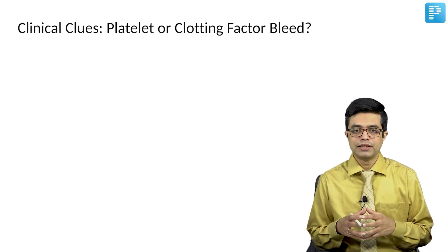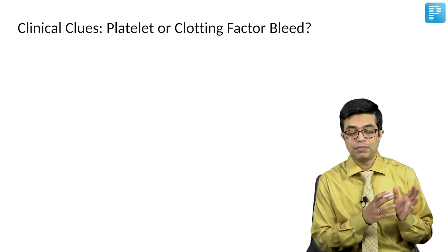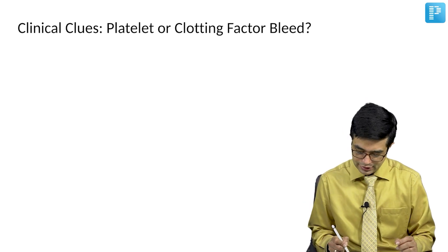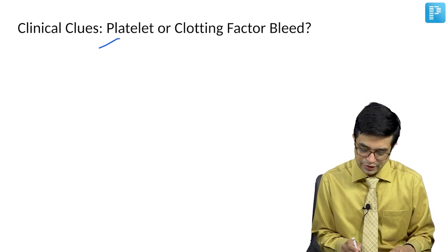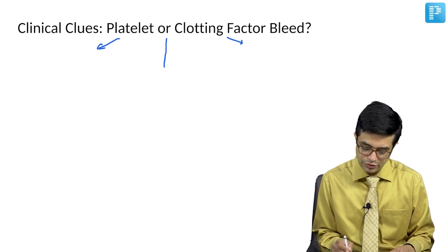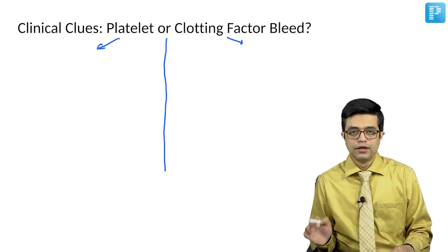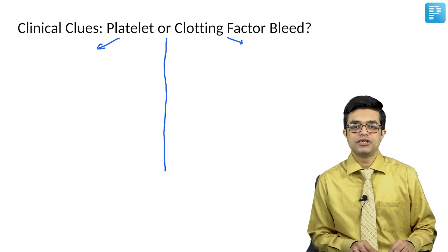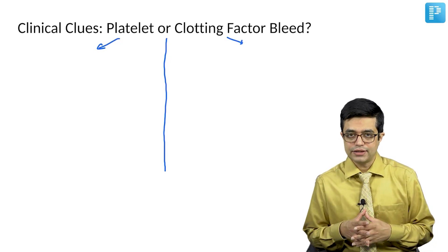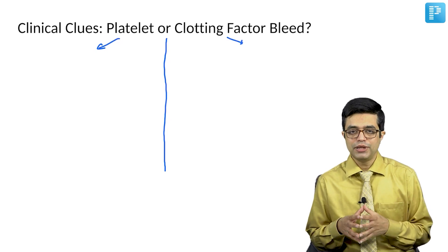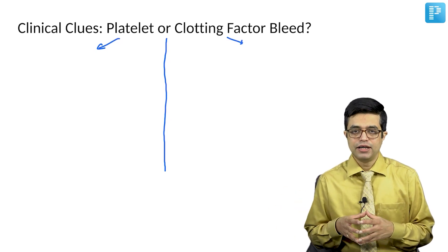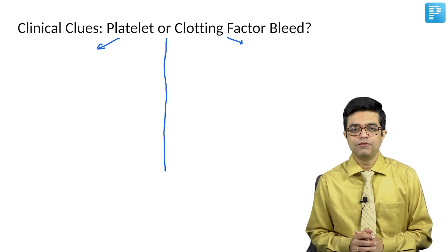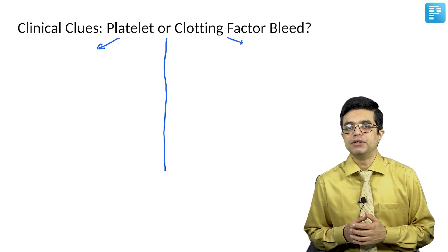We are interested in knowing whether a bleeding clinically is platelet-based or coagulation clotting factor-based. There are many ways you can clinically distinguish between the two — you can do it in a tabulated form. Bleeding manifestations can occur at various sites. There can be superficial bleeds and deep bleeds. Deep bleeds will occur inside the organ systems, while superficial bleeds will be in the form of mucocutaneous bleeds.